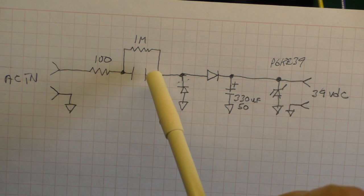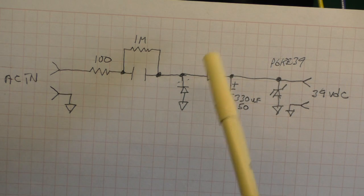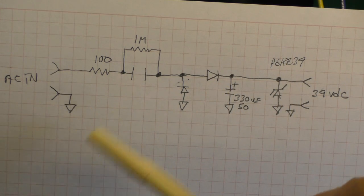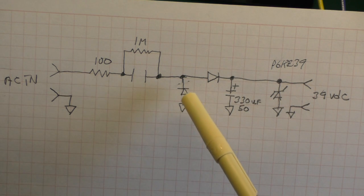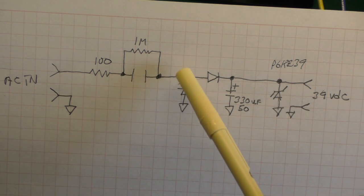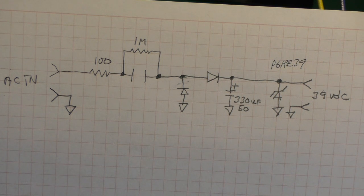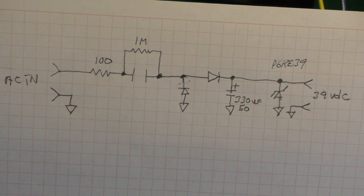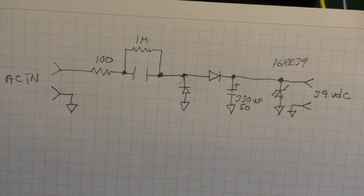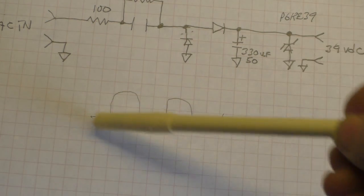The 1 mega ohm is there so when the circuit shuts off it bleeds down this cap, it's just a safety measure. From there it goes into this diode here which takes the negative going voltage off the AC leaving only the positive. This is just a crude drawing of what it looks like.